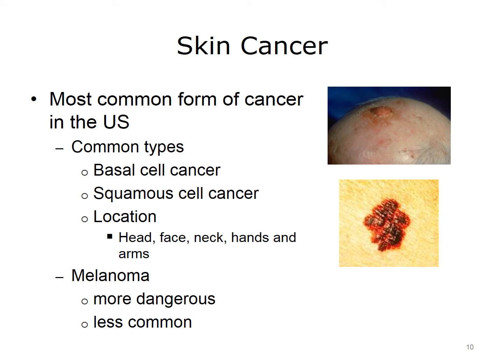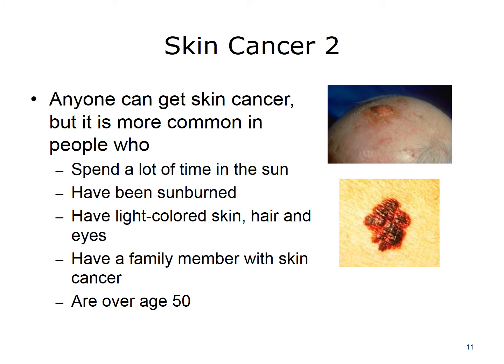The top left picture on this slide is of a squamous cell cancer of the scalp. Another type of skin cancer, melanoma, is more dangerous but less common. Melanomas are considered malignant tumors and do spread to other parts of the body. The top right picture is of a melanoma. Anyone can get skin cancer, but it is more common in people who spend a lot of time in the sun or have been sunburned, have light-colored skin, hair, and eyes, have a family member with skin cancer, and are over age 50.